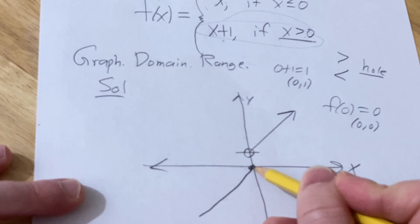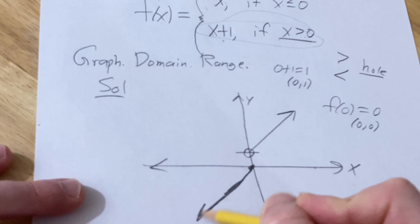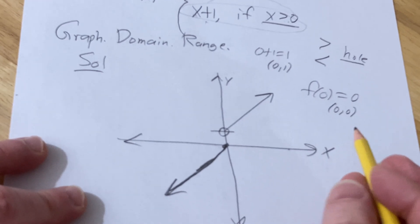So it's supposed to be a straight line. There it is. And that's the graph, right? That's pretty much it.